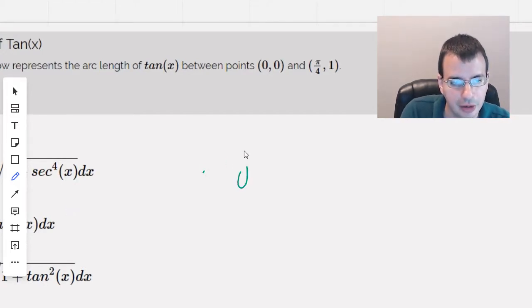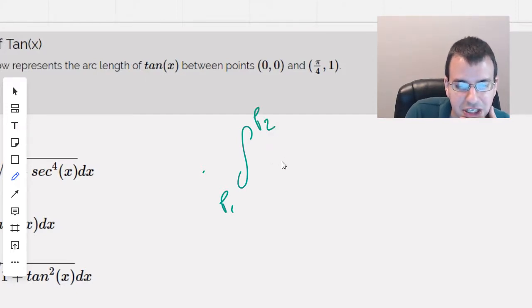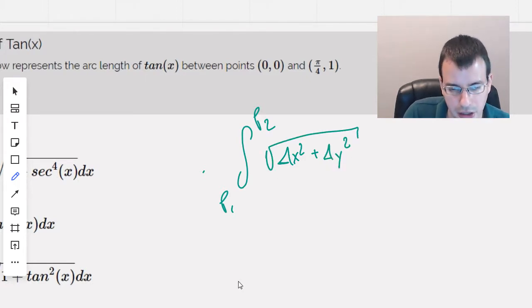So the arc length formula will be from 0.1 to 0.2, and it's just an extension of the Pythagorean theorem, possibly the Pythagorean, not quite sure how it's pronounced.